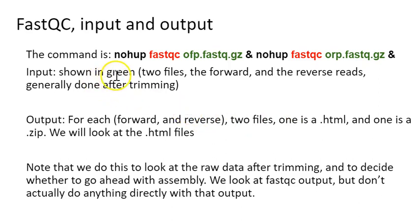So the input shown in green, the forward and the reverse data, it can be zipped. That's totally fine. And the output is going to be a forward and a reverse file. We don't have to tell it what the output will be. It figures that out for itself. There'll be two files, one is an HTML file and one is a .zip file. In order to look at the HTML file, you have to pull it over using FileZilla and look at it on your desktop, and we can do that together in class.